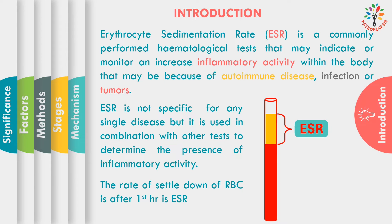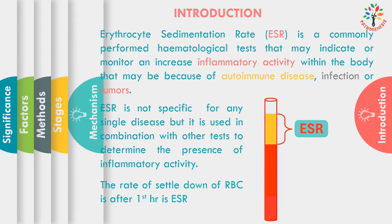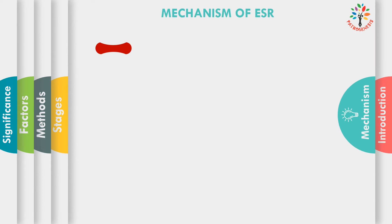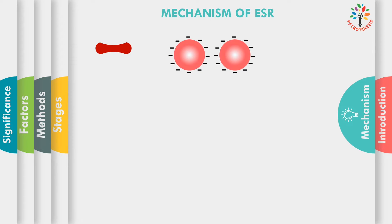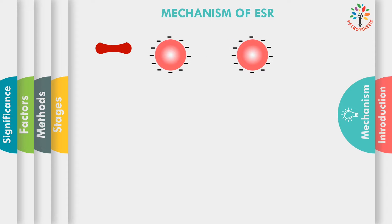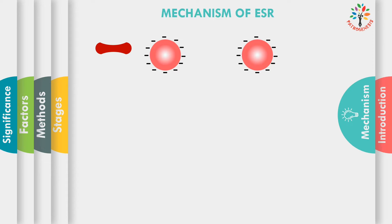Now I am going to talk about the mechanism of ESR. Typically, RBCs settle very slowly as they have a negative charge on their surface, which causes them to repel each other. As a result, the RBCs do not form rouleaux.